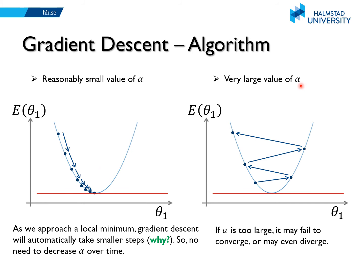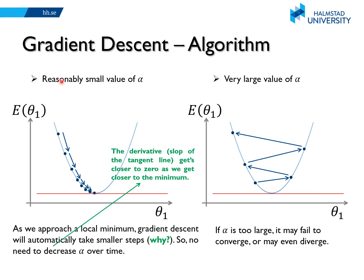The learning rate alpha is called a hyperparameter. If you choose alpha to be very large, gradient descent will update your parameters too much at each iteration, and you may skip or jump over the minimum — failing to converge and possibly diverging. If alpha is reasonably small, gradient descent will take smaller steps as we get closer to the minimum until it converges. If you select alpha to be very small, gradient descent will take very small steps and will need many more iterations before it converges.